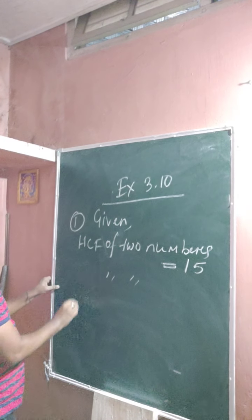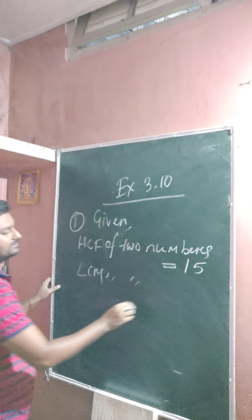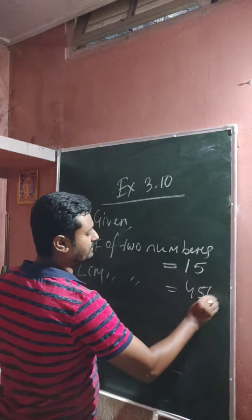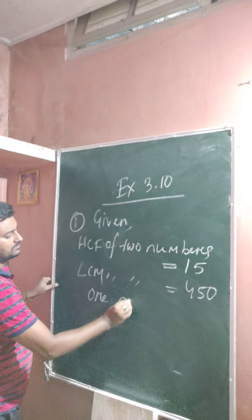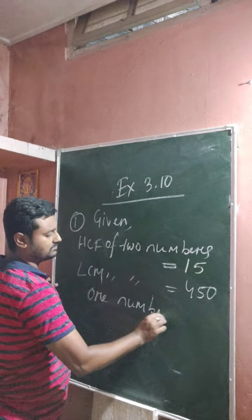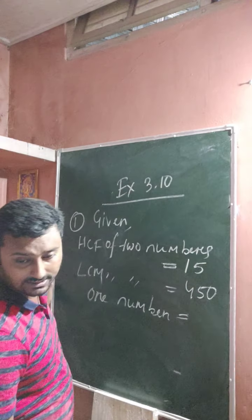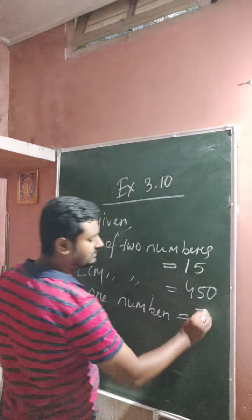HCF is 15, LCM is 450, okay? And one number is also given, which is 75.